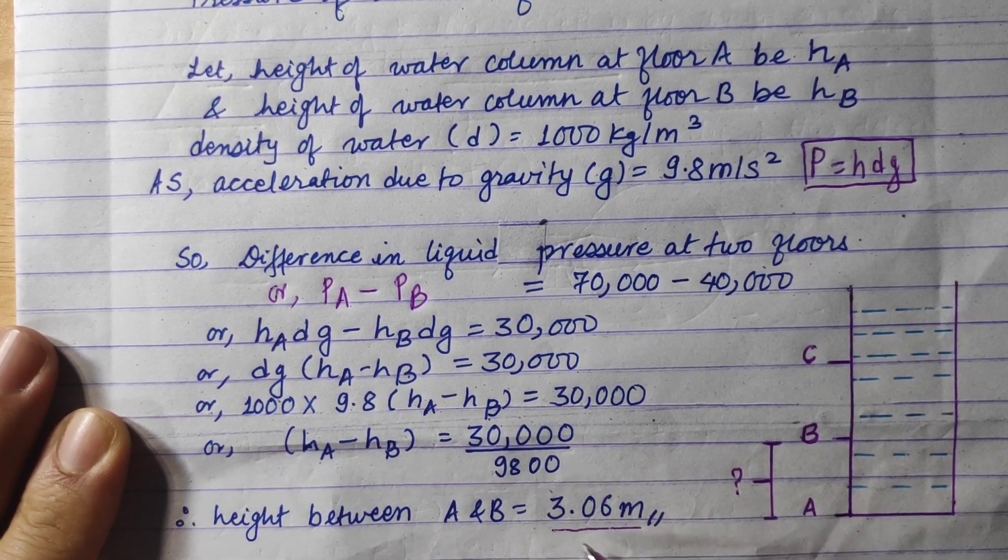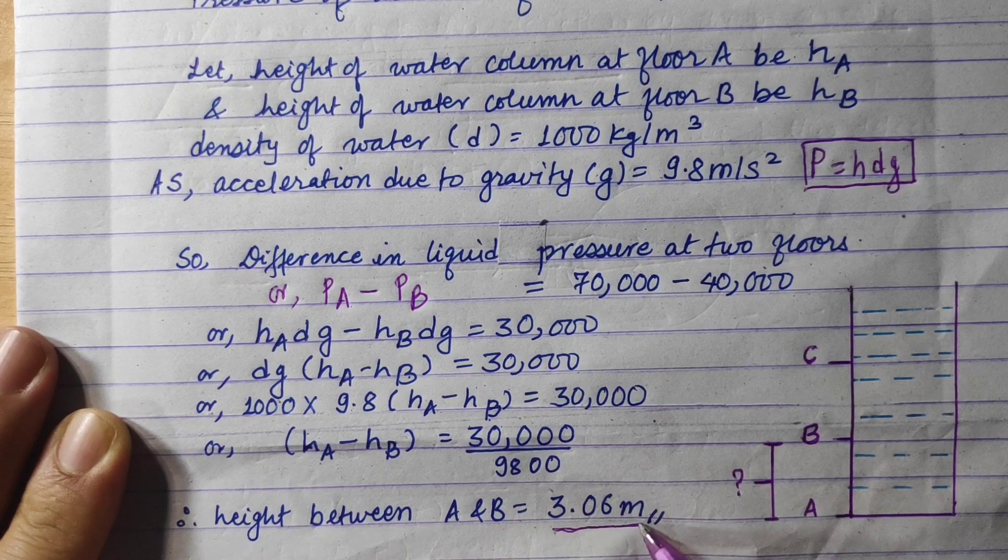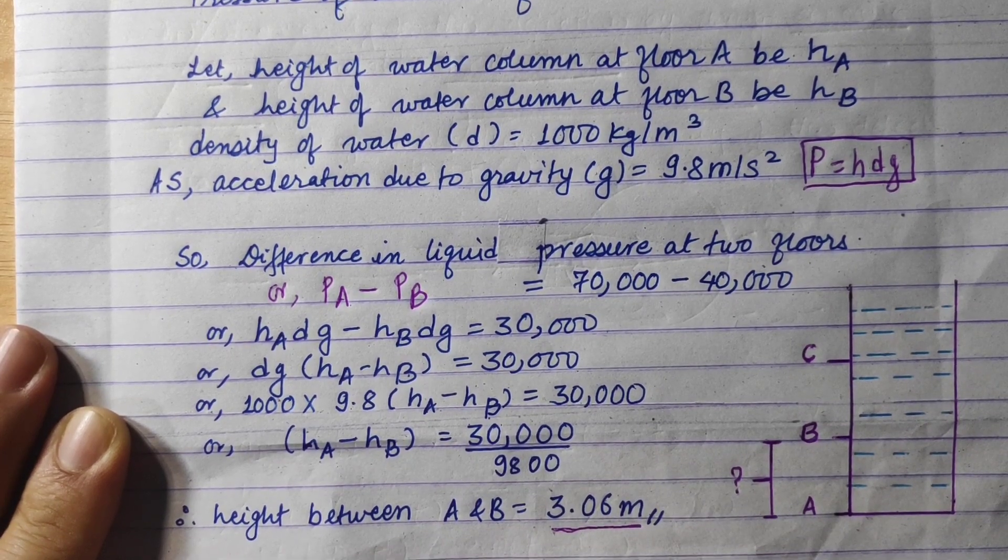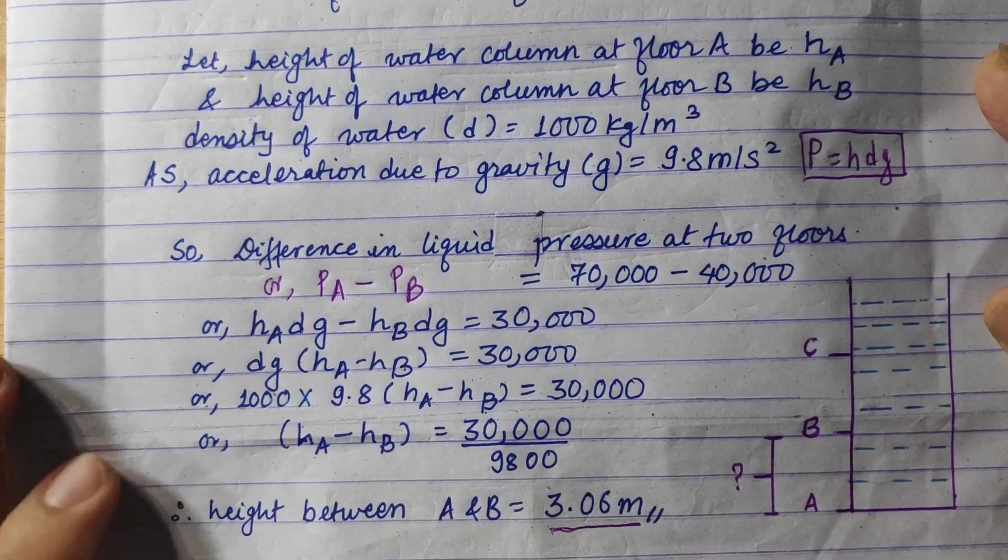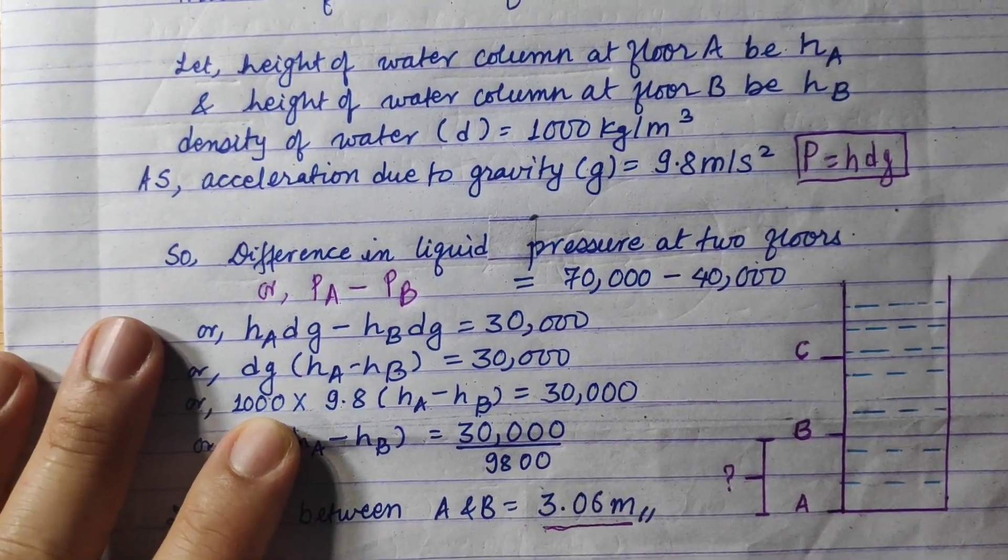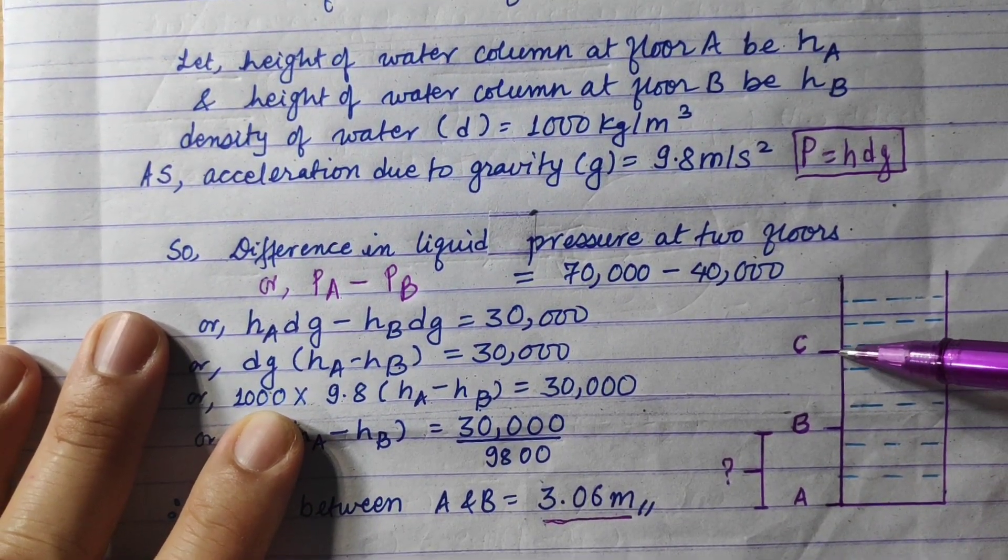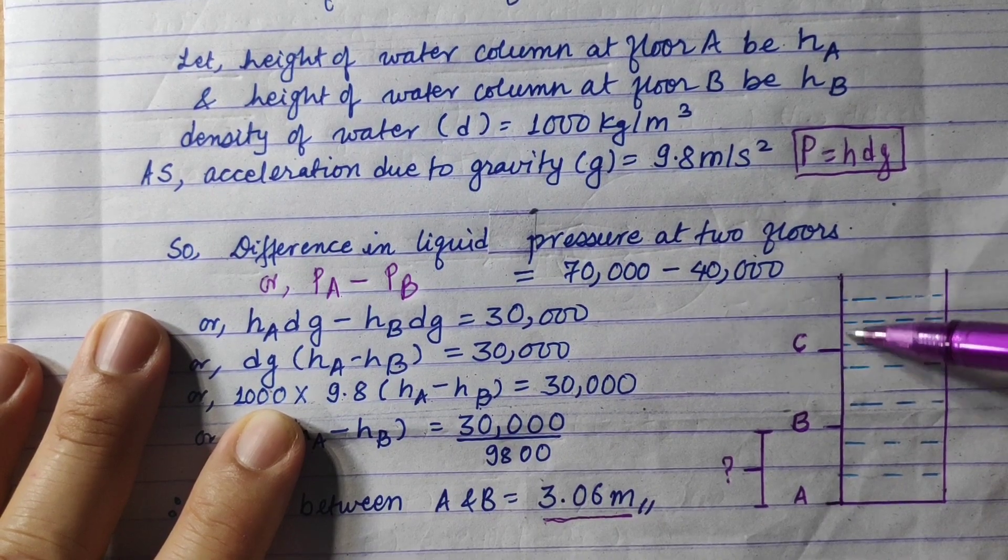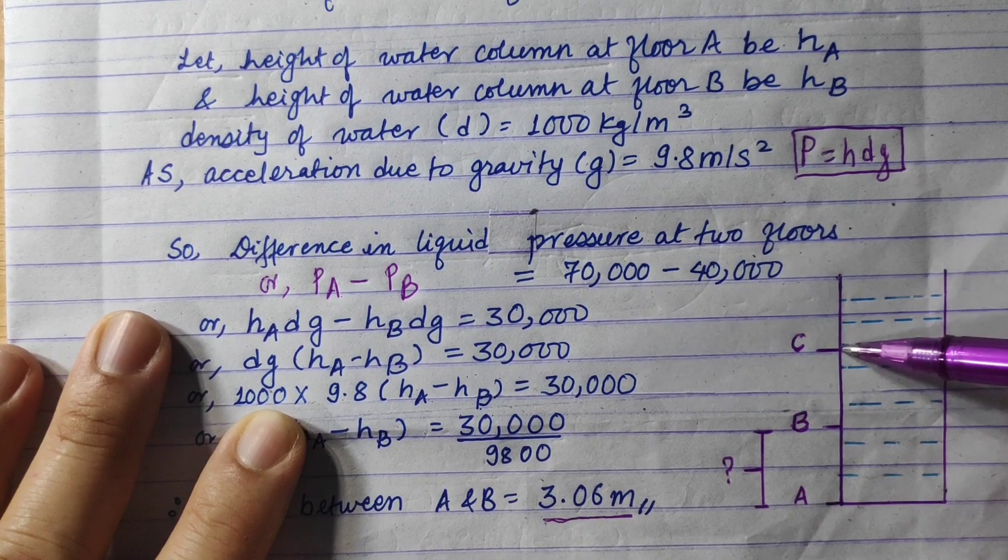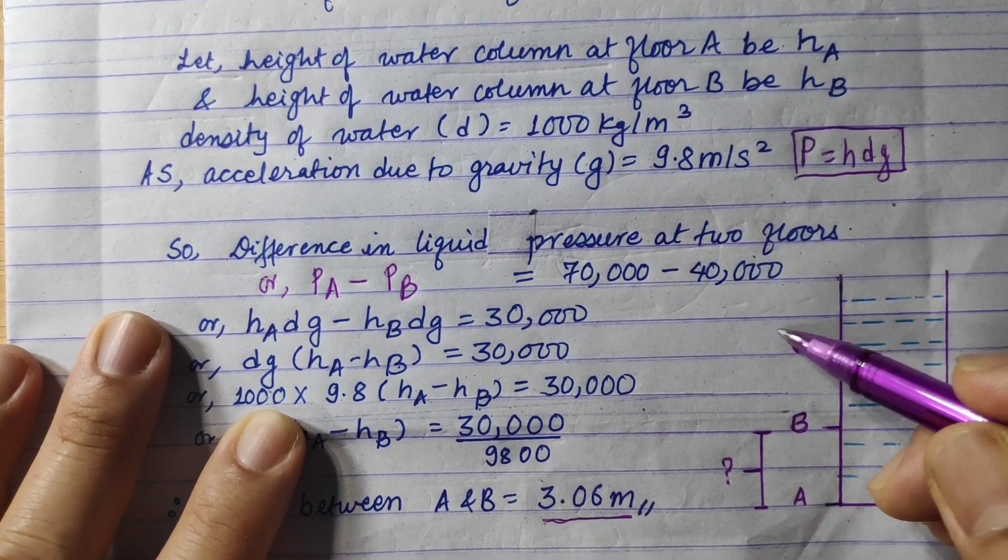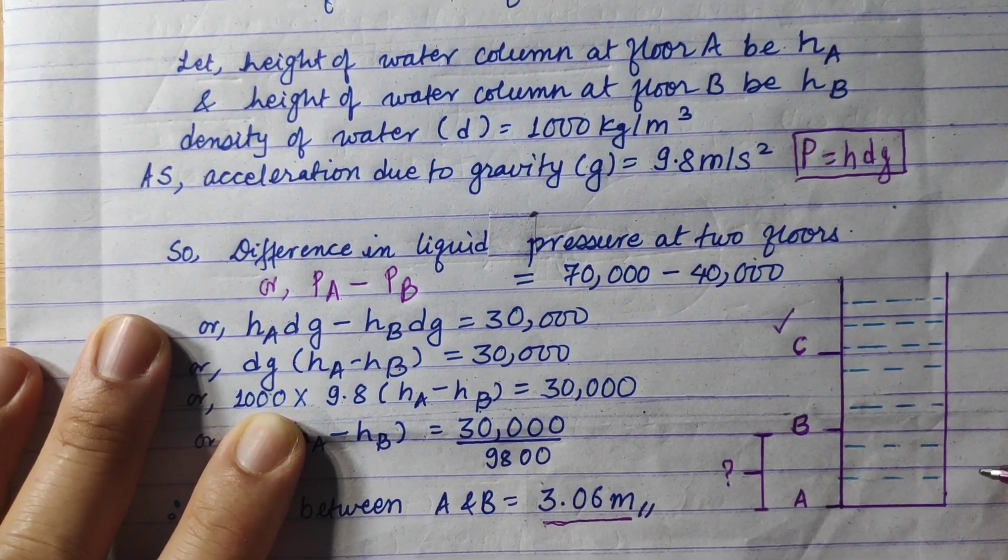So the difference in height between floor A and floor B is 3.06 meter. This can be further shown in a diagram. As we found earlier, C is the topmost floor because its liquid pressure is lowest, which means the height of liquid column is also lowest. So the first question's answer was C is the topmost layer.